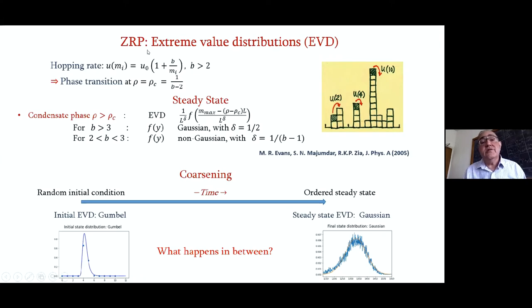Let me first talk about the zero range process. For a certain type of hopping rate, dependence of the rate on the mass, the phase transition occurs at a point rho equal to rho_c, which is well known. Moreover, in a very nice paper, Evans, Majumdar and Jir have worked out the form of the extreme value distribution, which refers to the condensate. They've worked out the profile of the condensate and what one finds is that it is a Gaussian. It's not one of the familiar extreme value distributions because we have a strongly correlated system here. And the spread is known for B larger than three, which is the parameter here. The state is a simple Gaussian.